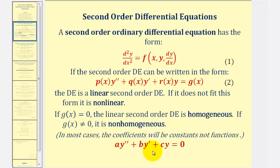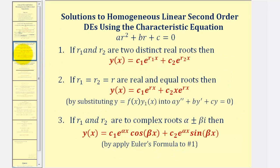We discussed in the first lesson that we can solve these types of differential equations by using a characteristic equation and the principle of superposition. Where if the equation is in this form, using the values of a, b, and c, we can form the characteristic equation, and then the values of r will help us find the general solutions. But the types of solutions do affect the form of the general solution.